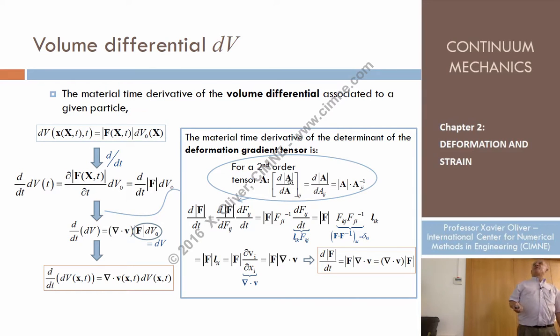The derivative of the determinant of a tensor with respect to the tensor - what is the sense of that? Well, the determinant of a tensor is a function of the components of the tensor, right? So I could differentiate this determinant with respect to component ij. That is the component ij of this tensor.